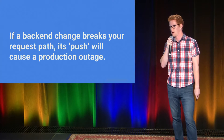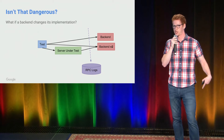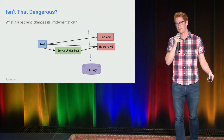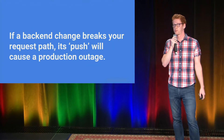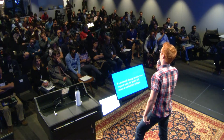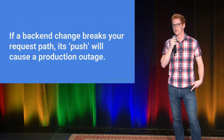Here's the core statement: if a backend change actually breaks your request path, its push will cause a production outage. So if the backend changes to version 2 and they push to production, and that change broke something in your request path, no test you write for your server is going to stop them from doing that. They can push to production immediately. At this point, you have to rely on other teams, because it is the backend's responsibility to completely test their API and provide a migration opportunity before pushing a new version.